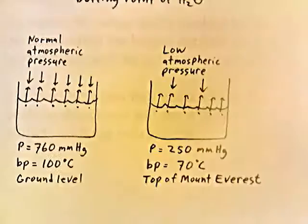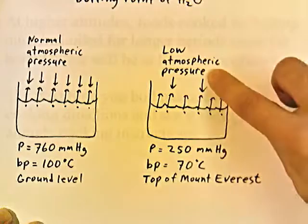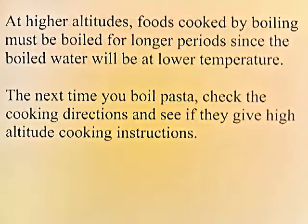Under normal atmospheric pressure, there are more air molecules pushing on the surface, so it's going to take a higher temperature to get the water to boil. But if you go to the top of Mount Everest, there are fewer air molecules pushing on the surface, so it'll boil at a lower temperature of 70 degrees. At higher altitudes, foods cooked by boiling must be boiled for longer periods since the boiling water will be at a lower temperature. The next time you boil pasta, check the cooking directions — if they give high-altitude instructions, they usually say to cook for a longer period of time.